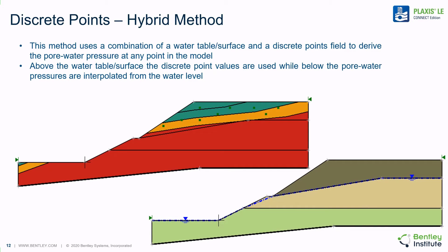The hybrid method allows the user to define the pore water pressure regime using both a water table and a discrete set of points above the water table. Below the water table, the pore water pressures are interpreted to be hydrostatic. The suctions or perched water tables defined above the water table line are interpolated using one of the methods that can be selected in the software.